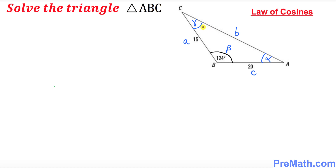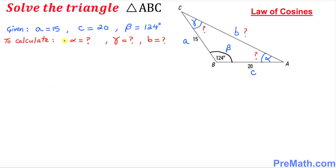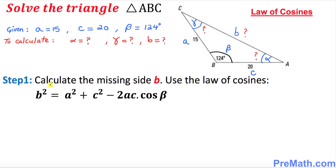We need to figure out angle gamma, angle alpha, and side b. Our given values are: a equals 15, side c equals 20, and angle beta is 124 degrees. The values we are going to calculate are alpha, gamma, and side b. In this very first step we are going to calculate the missing side b.